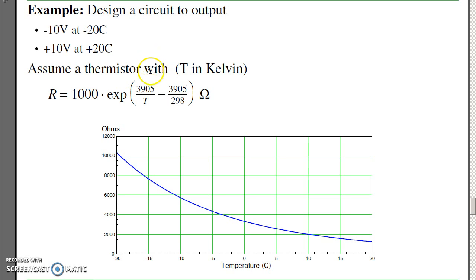For example, suppose I choose a thermistor where the B-term is 3905. It's normally 1000 ohms at 25 degrees Celsius. Design a circuit to go from minus 10 to plus 10 volts from minus 20 to plus 20 C, just like we did before.